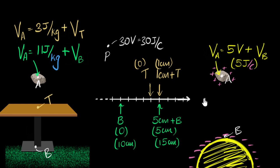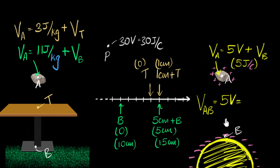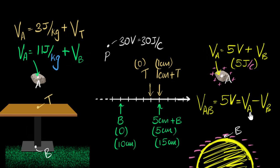Let me show you the standard way of writing this. We often write this as the potential at point A with respect to point B — that's the notation. The reference point is B. We can call this five volts directly, and you can also write it as V_A minus V_B. This means the same thing: potential at A, how much more it is compared to the reference point B. So whenever you're talking about potentials, you're always talking about the difference between the values of potentials between two points — that's why we can also call this potential difference.